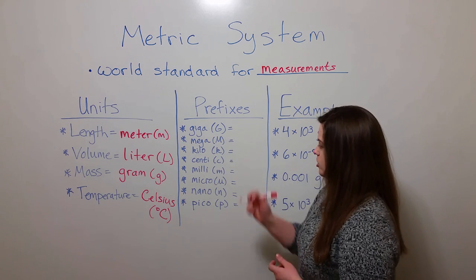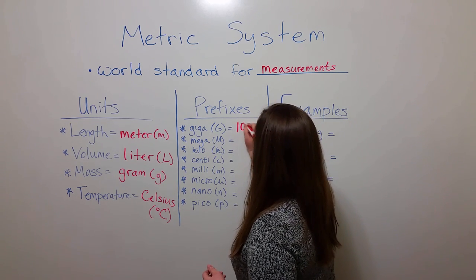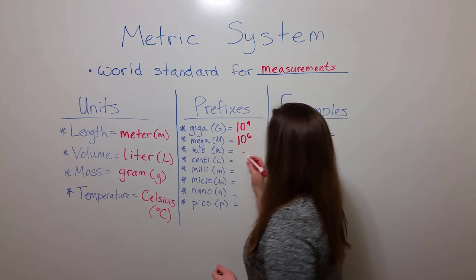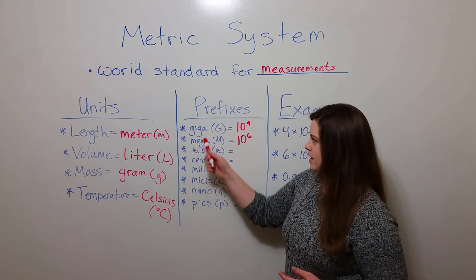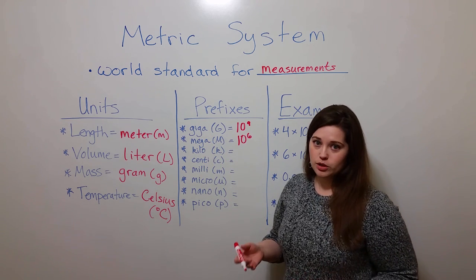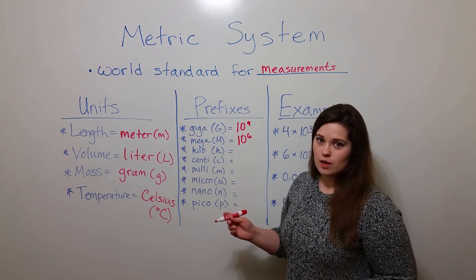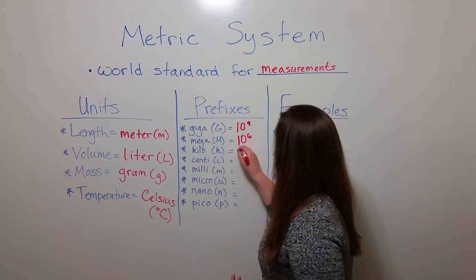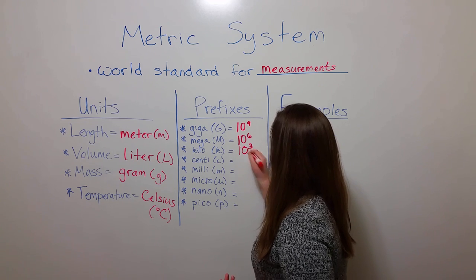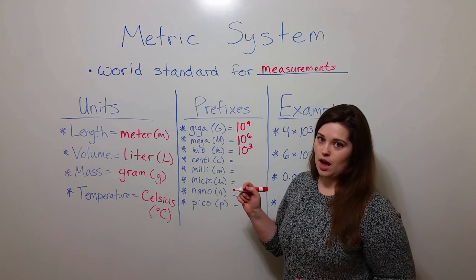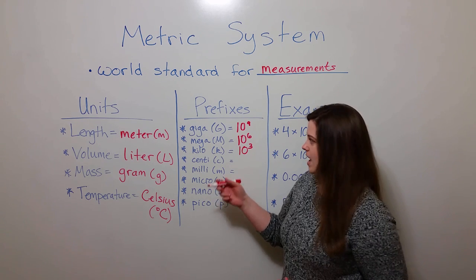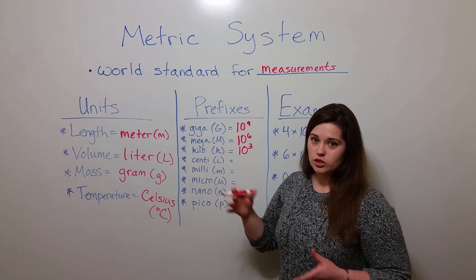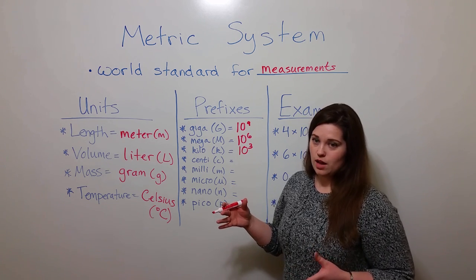There's giga, which is ten to the ninth. Mega, which is ten to the sixth. Of course, we're most often hearing giga and mega used in computer terminology. For example, we've all heard of gigabytes and megabytes. Kilo is ten to the third. For example, when we talk about a 5K, that is using the K from kilometer to show the approximate level of distance.